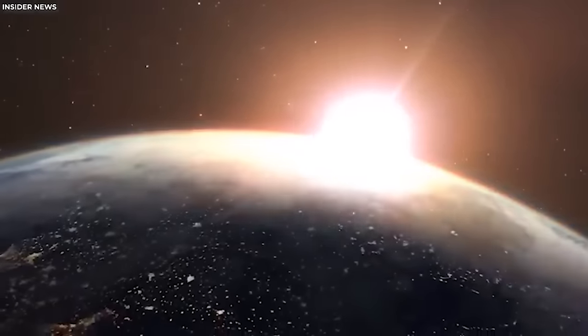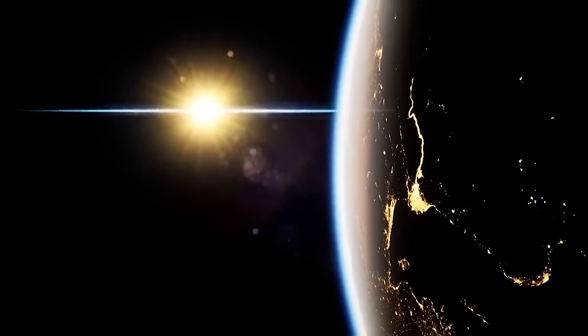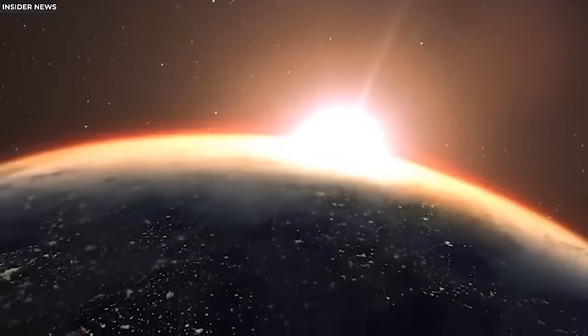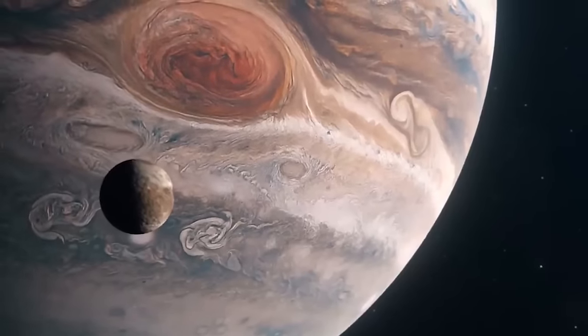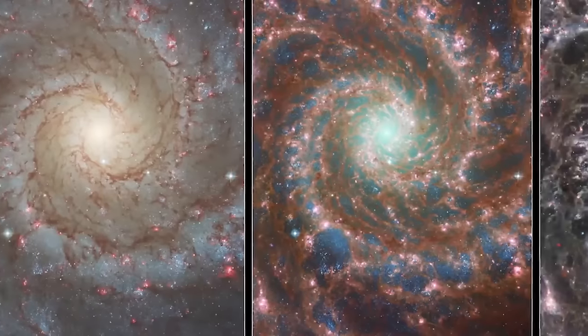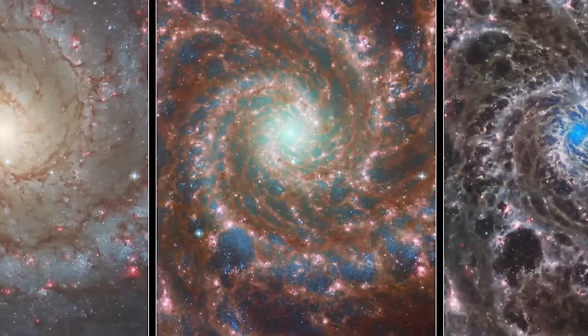Unlike any other planet in our solar system, HIP 65426b is situated at a distance from its host star that is 100 times greater than the distance between our sun and Earth. To give you some perspective, Pluto is just 40 times farther from the sun than Earth. Now imagine an exoplanet that's a colossal gas giant about 12 times the size of Jupiter.